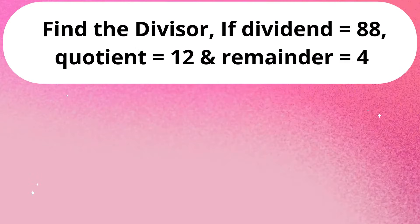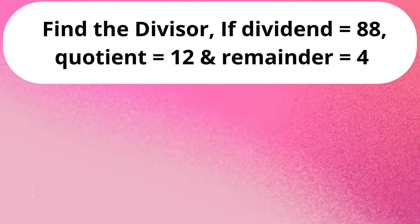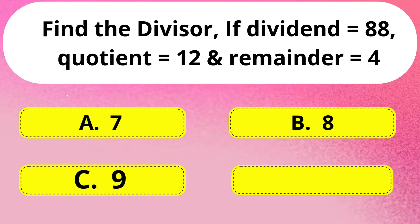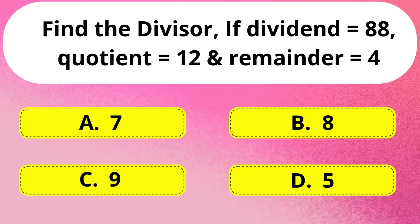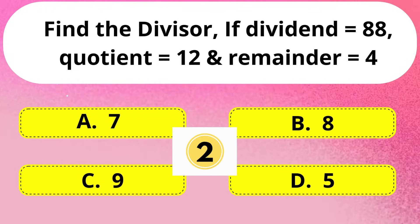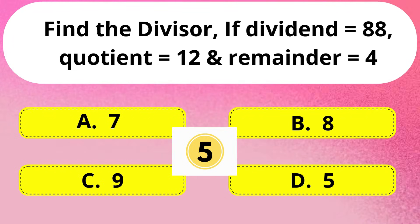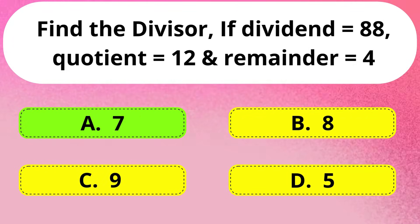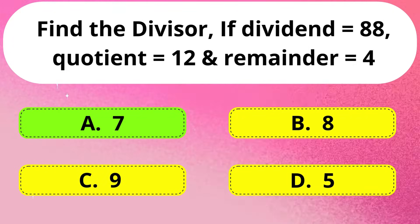Next question. Find the divisor if the dividend is equal to 88, quotient is equal to 12, and remainder is equal to 4. The answer is Option A: 7.